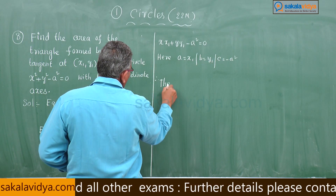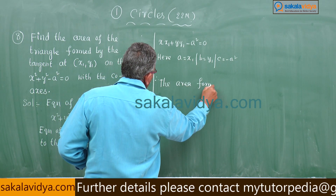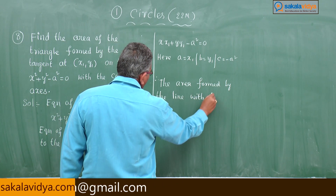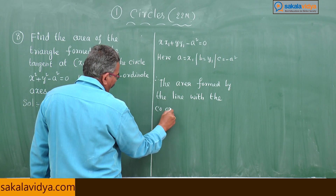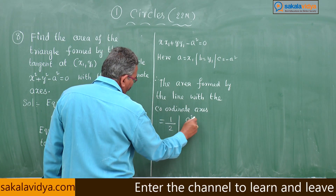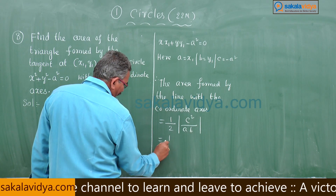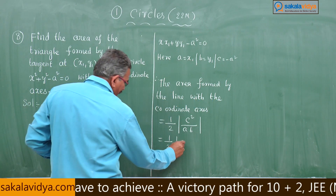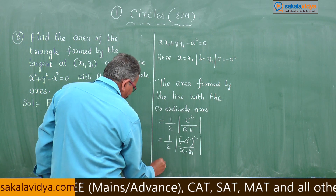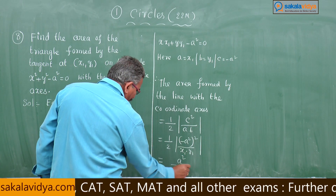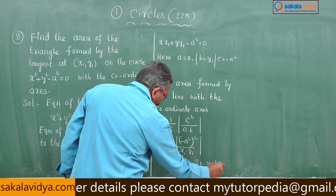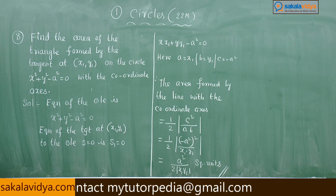Therefore, the area formed by the line with the coordinate axis equals half mod(c² divided by ab). So, half mod of c squared — c stands for minus a² — so minus a² whole squared, divided by a which stands for x₁ into y₁. This equals a⁴ divided by 2·|x₁·y₁| square units. This is the answer.